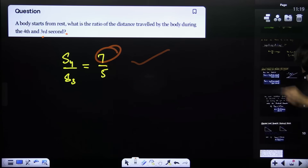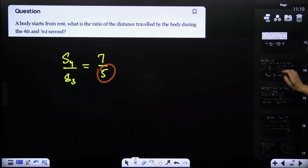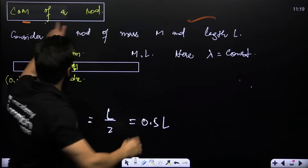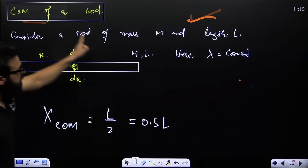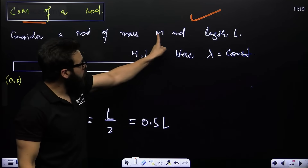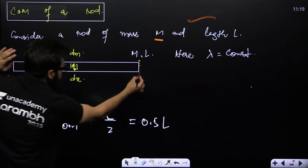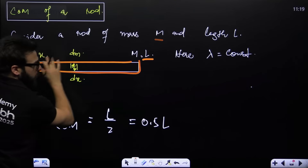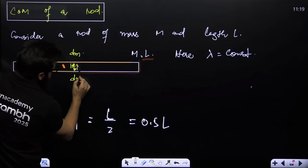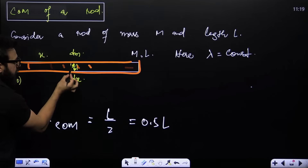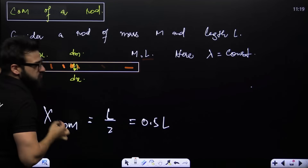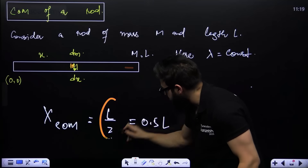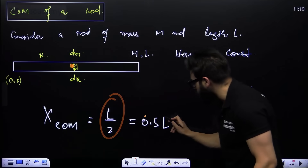Next, extremely important: center of mass of a rod. Consider a rod of mass M and length L. If mass is constant at every point (uniform rod), its center of mass is exactly at the center, that is at L/2 or 0.5L.